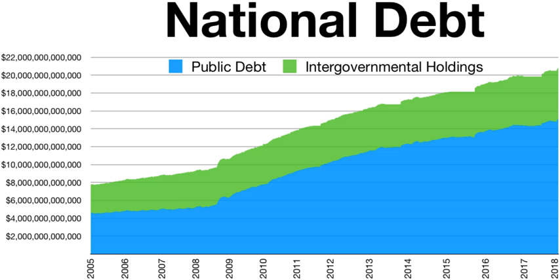As of September 2014, foreigners owned $6.06 trillion of U.S. debt, or approximately 47% of the debt held by the public of $12.8 trillion and 34% of the total debt of $17.8 trillion. As of 2018, the largest holders were China, Japan, Ireland, and Brazil. The share held by foreign governments has grown over time, rising from 13% of the public debt in 1988 to 25% in 2007. As of September 2014, the largest single holder of U.S. government debt was China, with 21% of all foreign-held U.S. Treasury securities.